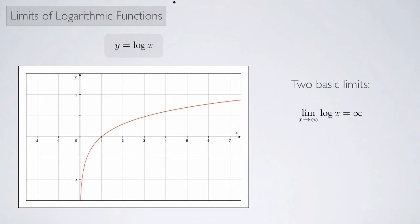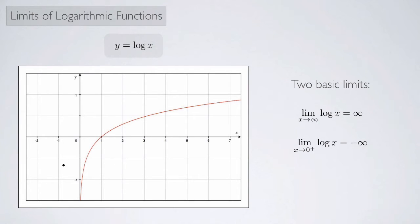We see that the limit as x approaches infinity of the log of x is infinity — as x gets larger and larger, the log seems to be going off to infinity. The other limit we can look at is as x approaches 0 from the right, and we see that it goes down to negative infinity. Notice that it wouldn't make sense to approach 0 from the left because there is no log there — the domain consists of everything on the positive x-axis.